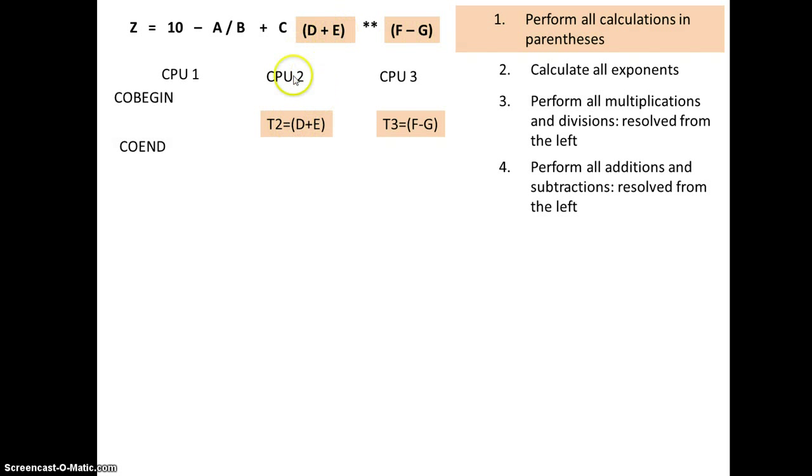So the D and the E can be calculated by one processor. This F minus G can be calculated by another processor. What these T's here represent is sort of like a temporary storage area. So that the D plus E is temporarily going to be stored in this T2. This F minus G is going to be temporarily stored into T3.